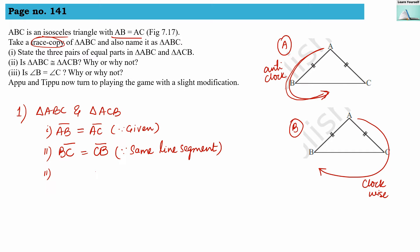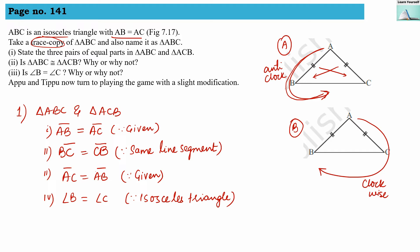For the third pair, either we can write AC equals AB (swapping the order as given), or we can write angle B equals angle C, since in an isosceles triangle the base angles are equal. Any three of these four possible equal parts can be written as the answer. Both triangles are exactly the same since one is the trace copy of the other.